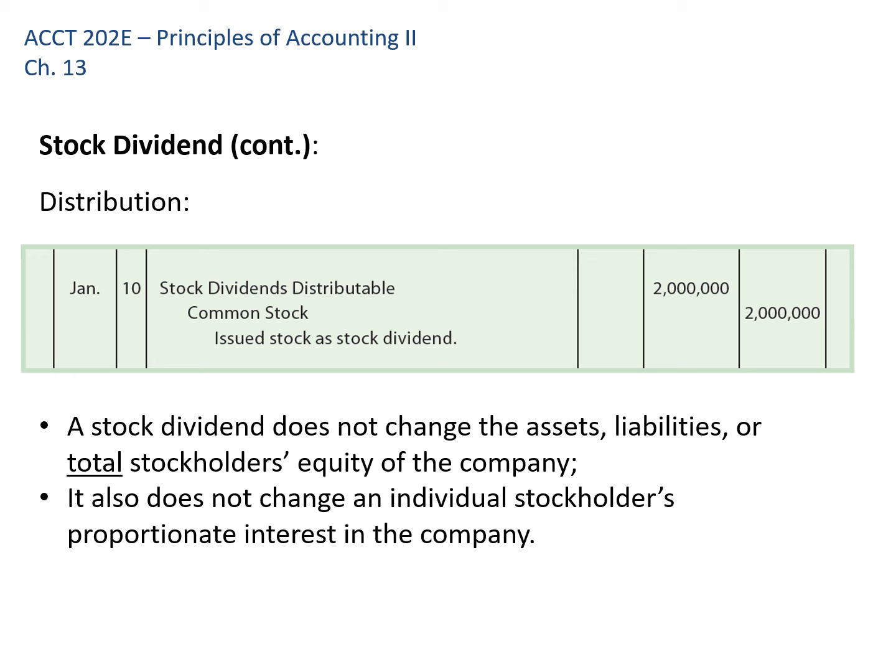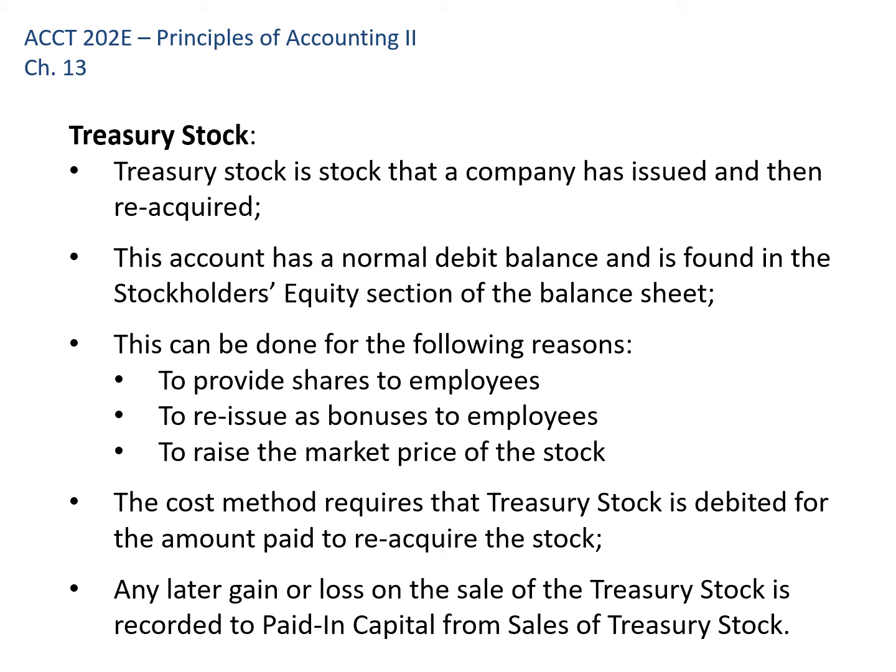Next is Treasury stock — stock that a company has previously issued and then reacquires by buying it back from shareholders. Companies do this for various reasons: to provide shares to employees for bonuses, to allow employees to purchase shares and increase employee ownership, or to raise the market price of the stock. That last reason is why you read about companies doing large stock buybacks.